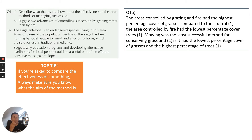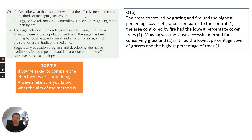The areas controlled by grazing and fire had the highest percentage cover of grasses compared to the control. The areas controlled by fire had the lowest percentage cover of trees. Mowing was the least successful method for conserving grassland, as it had the lowest percentage cover of grasses and the highest percentage of trees. In that answer you can see that the answers have been qualified — you're describing the data but also qualifying it in relation to the question about effectiveness.